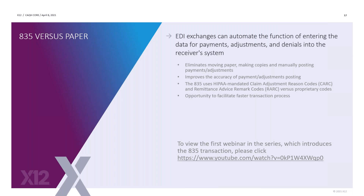The 835 provides faster transaction processing — the minute the 835 is posted, immediately after that a COB claim could be generated so that the entire cycle for that patient's claim can be processed. I encourage you, if you did not have an opportunity to see the original session, there is a link available. I believe when you registered for this session there was also a link on the CAQH course screen that would have taken you to that site so you can attend that session and listen in.